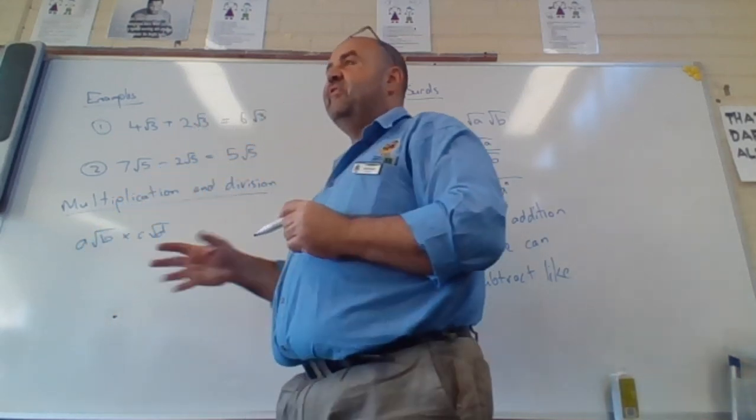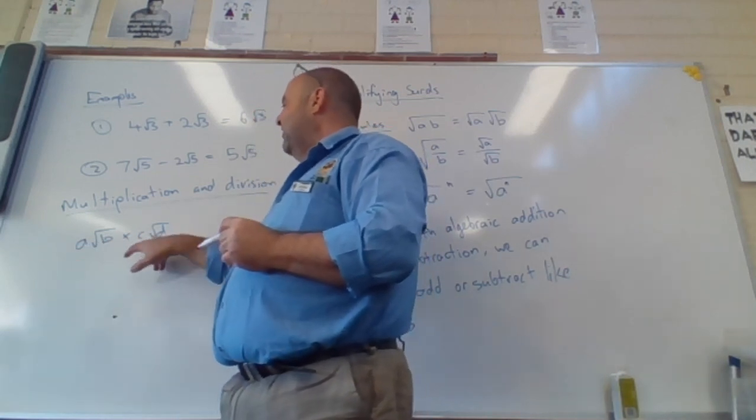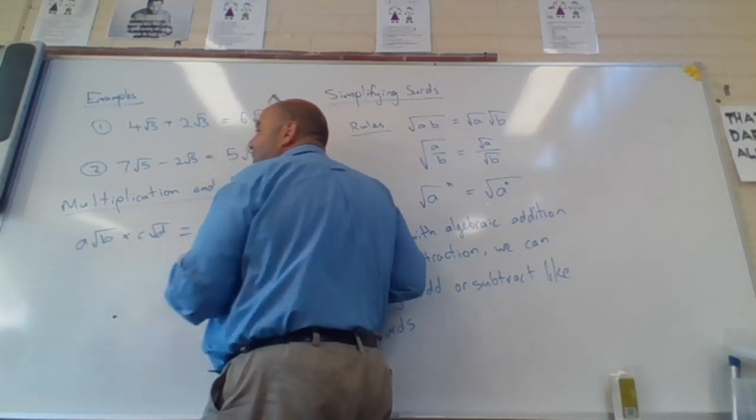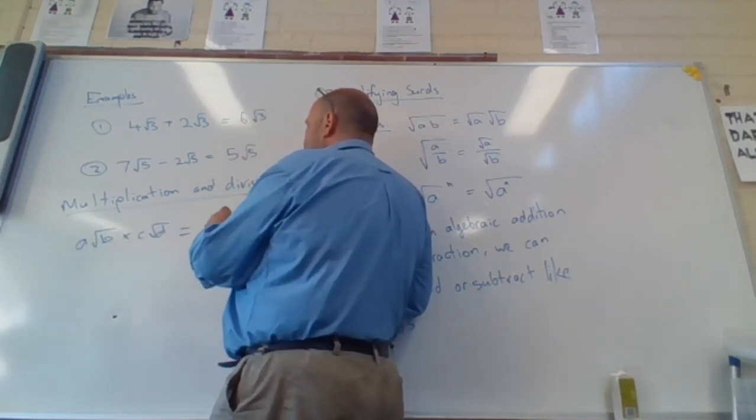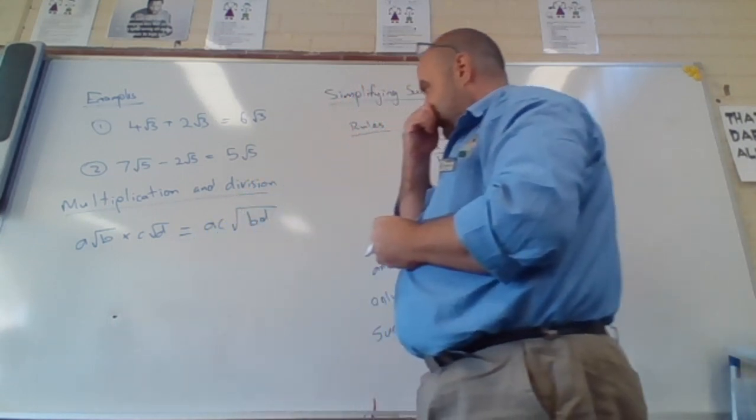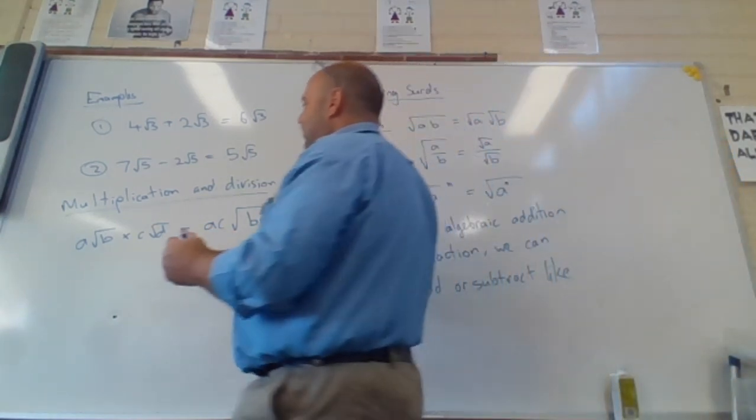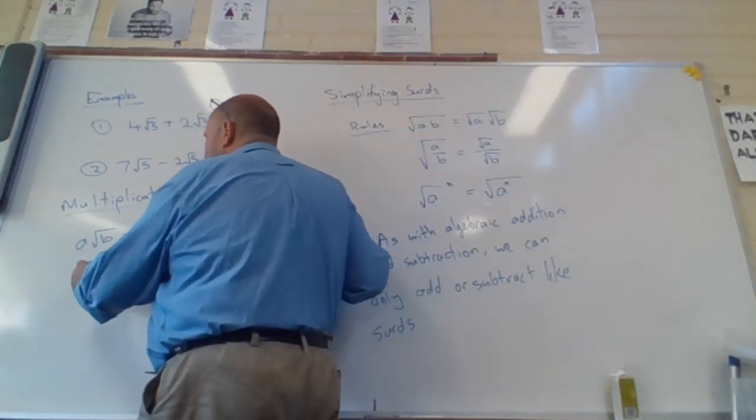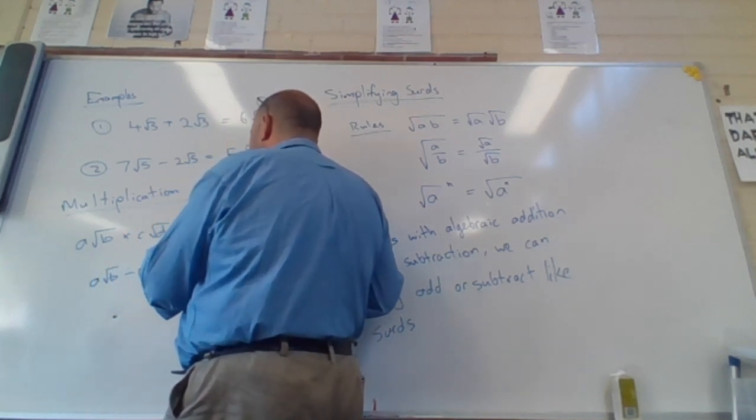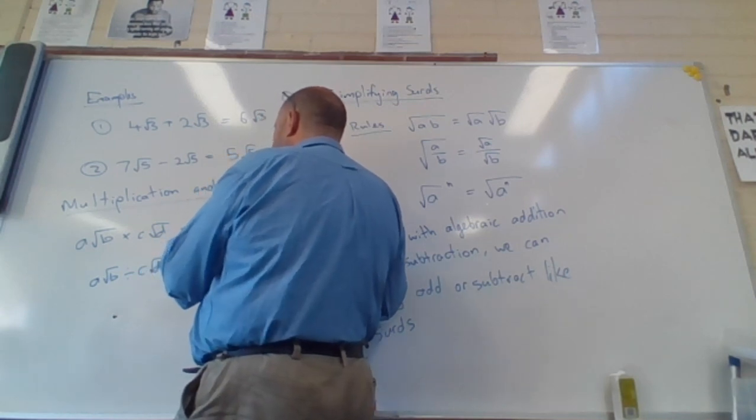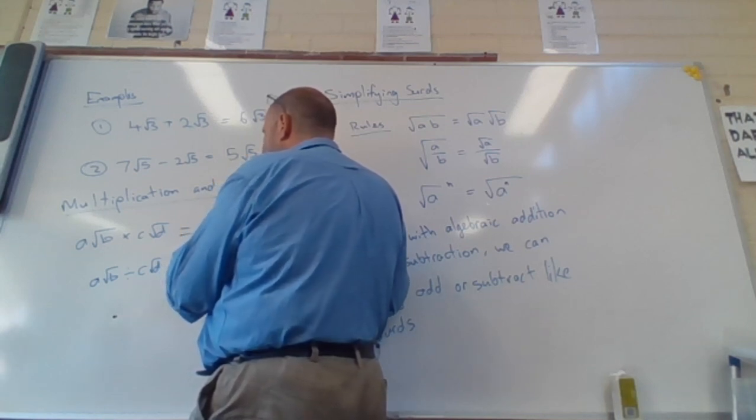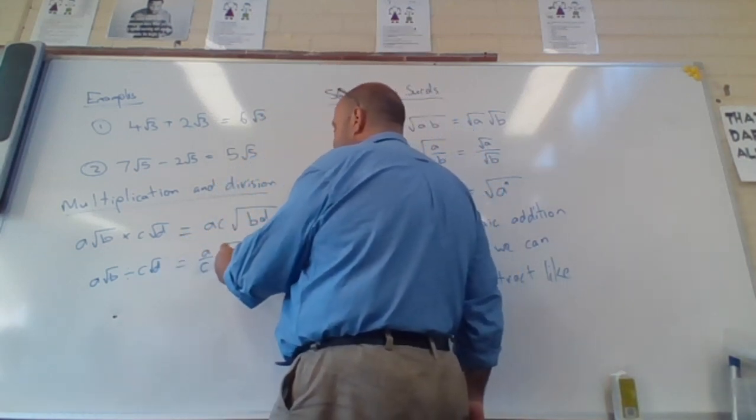I've got 2 surds, a times the square root of b times c times the square root of d. Well then the coefficients, the numbers out the front, I multiply as normal. And the parts inside the surd, I multiply them as normal. The same deal with division. A root b divided by c root d is a over c times the square root of b over d.